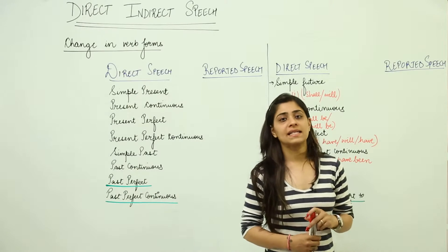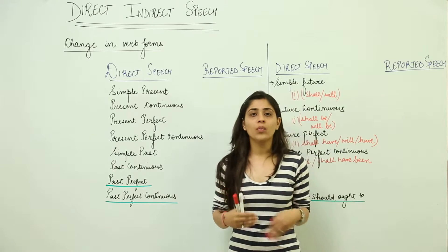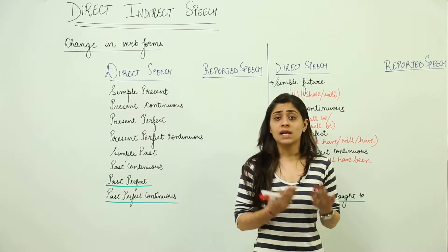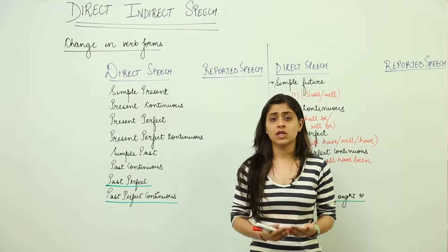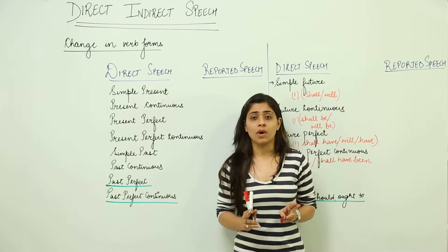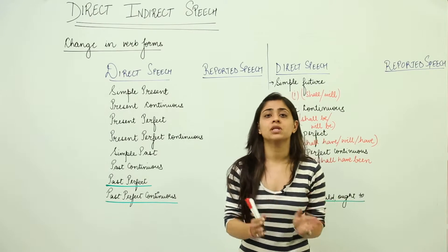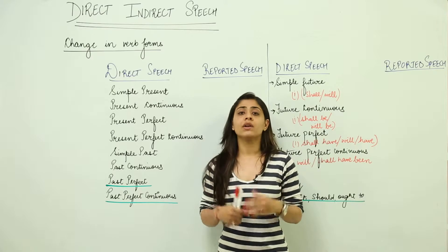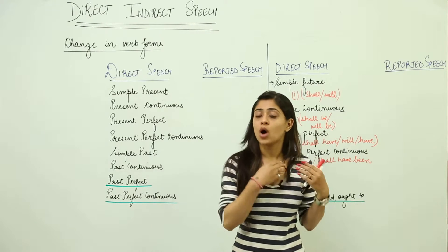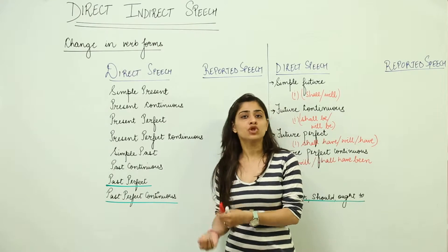Today's topic is direct and indirect speech. We're going to discuss how we report speech or how we write a direct speech. Direct speech is the direct conversation or conveyance of a message in inverted commas, wherein we do not change the wording of what the person has actually said. In reported speech, we remove the inverted commas and add some changes to it.